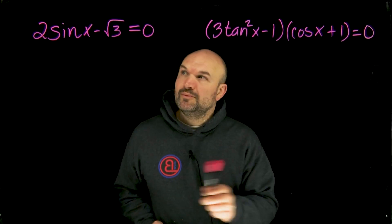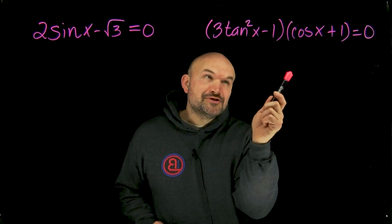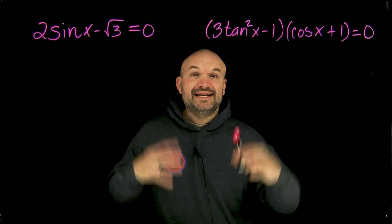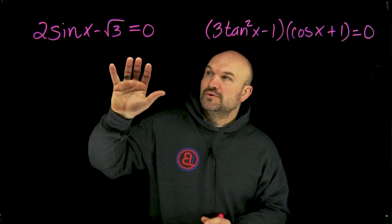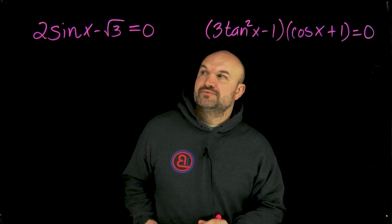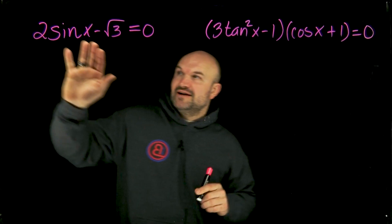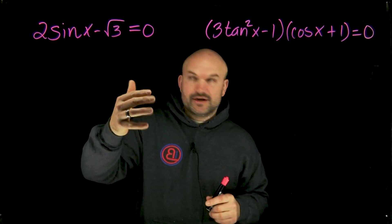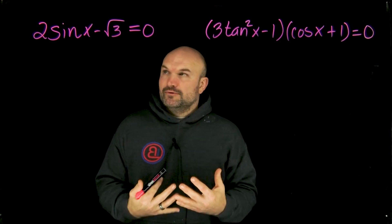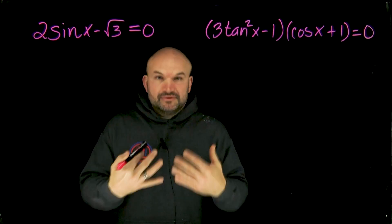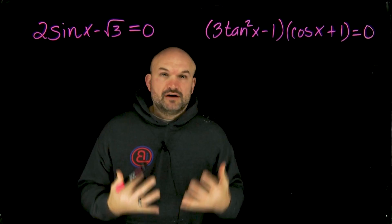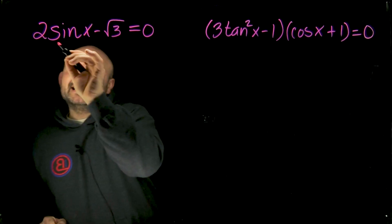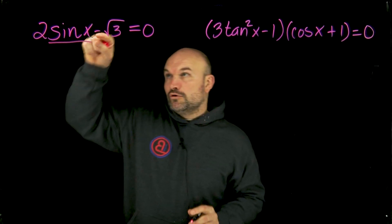When solving trigonometric equations where we have extra stuff going on, the first thing we want to do is isolate our functions. Let's take a look at this one first. We have two times sine of x minus the square root of three is equal to zero. The main thing we want to do, based on our understanding of solving trigonometric functions, is to go ahead and isolate our trigonometric function.